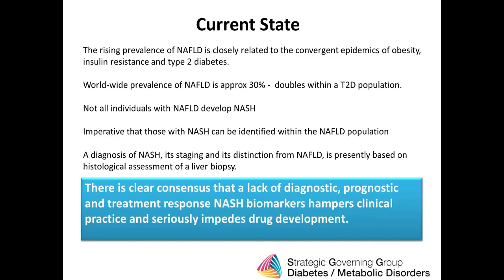What's the current state? The prevalence of NAFLD is rising, closely linked to the epidemics of obesity, insulin resistance, and type 2 diabetes. The estimated worldwide prevalence is approximately 30%, and this doubles within a type 2 diabetic population. These numbers are somewhat estimates because in the absence of biopsy we really can't diagnose where any individual sits within the NAFLD spectrum. Many individuals will have steatosis but will never develop NASH, and it's imperative that we can begin to identify which subjects we need to be treating.